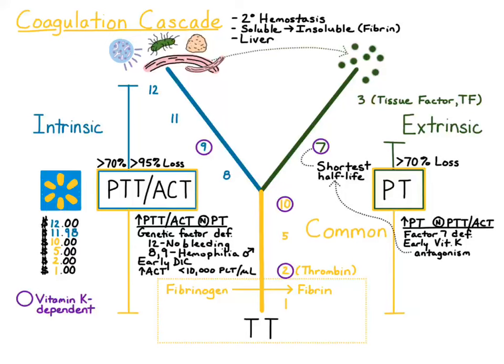This video is going to be on causes for a prolonged PT and PTT. There are three main causes for prolongation of PT and PTT, the first of which is vitamin K antagonism. That's because the vitamin K dependent factors are in all pathways, so you'd expect to see prolongation of all the PT and PTT times. Vitamin K antagonism occurs when the patient ingests a rodenticide that contains an antagonist such as coumarin.